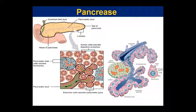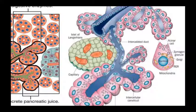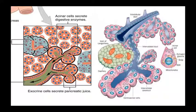Pancreas structure includes the pancreatic duct, tail, head, and lobules where there are acinar cells which secrete digestive enzymes. Pancreatic islet cells secrete hormones like insulin and glucagon. Pancreatic ducts include intra-lobular ducts, intercalated ducts, and central acinar cells. Acinar cells contain zymogen granules, rough endoplasmic reticulum, mitochondria, and a nucleus.